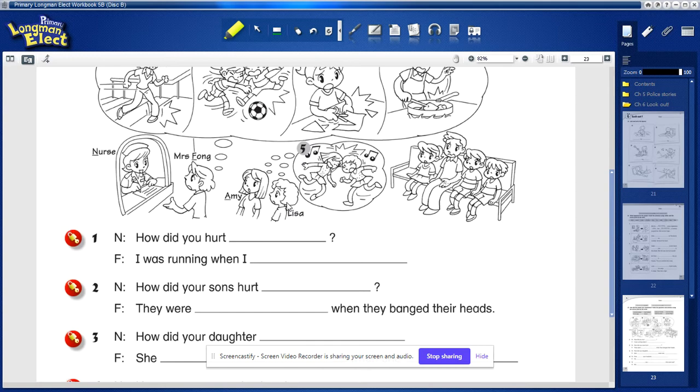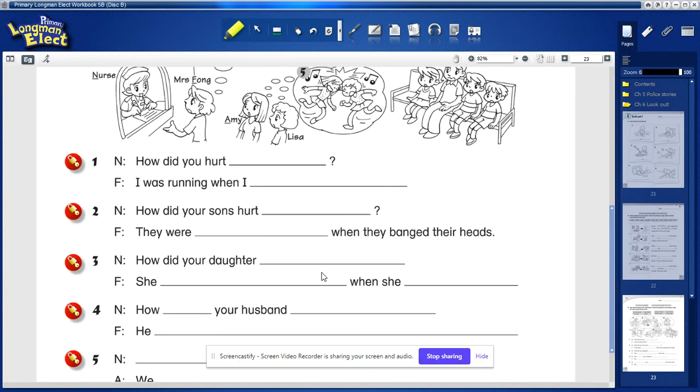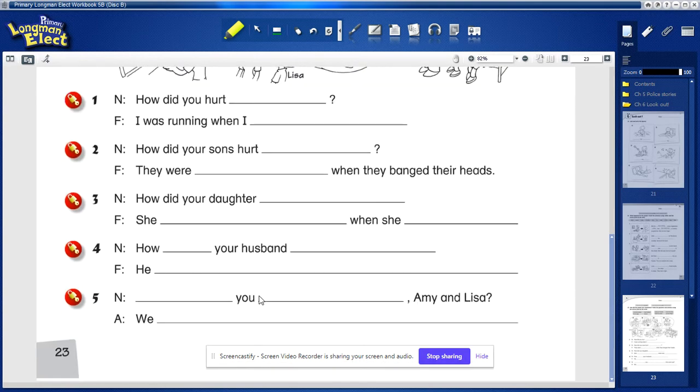Which reflexive pronoun? You, here, means both of you, Amy and Lisa. So the reflexive pronoun should be - look up your language focus to find out. Remember to spell it correctly.